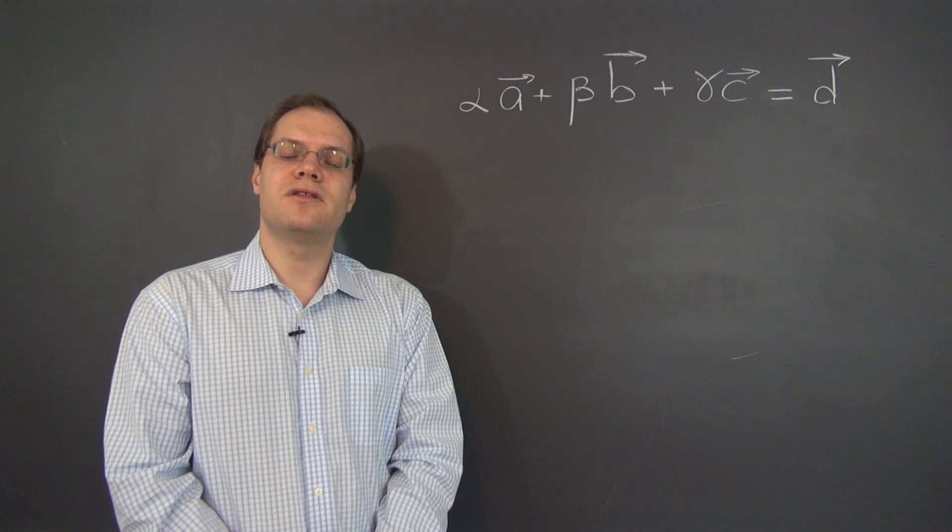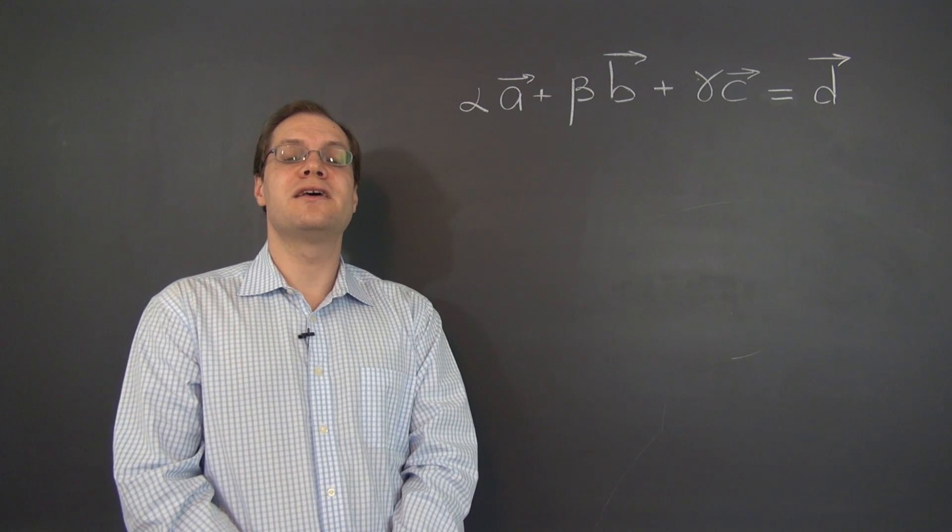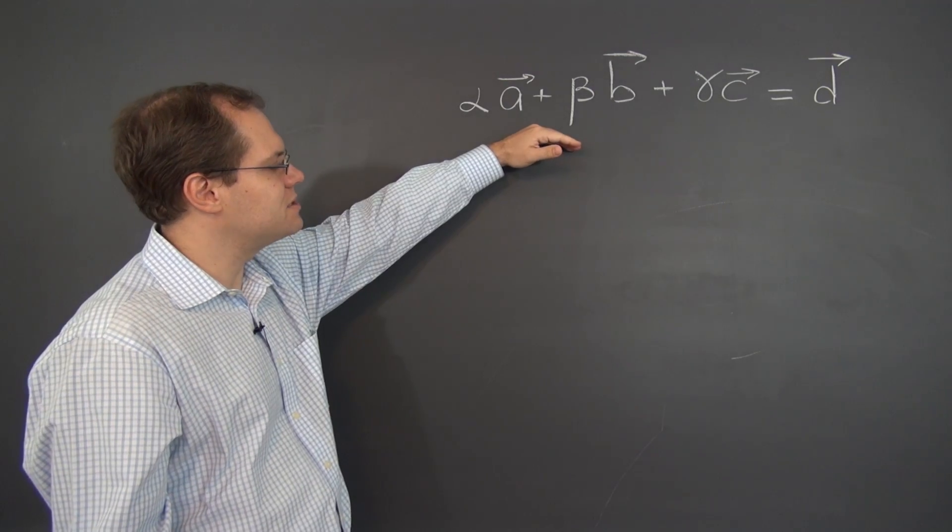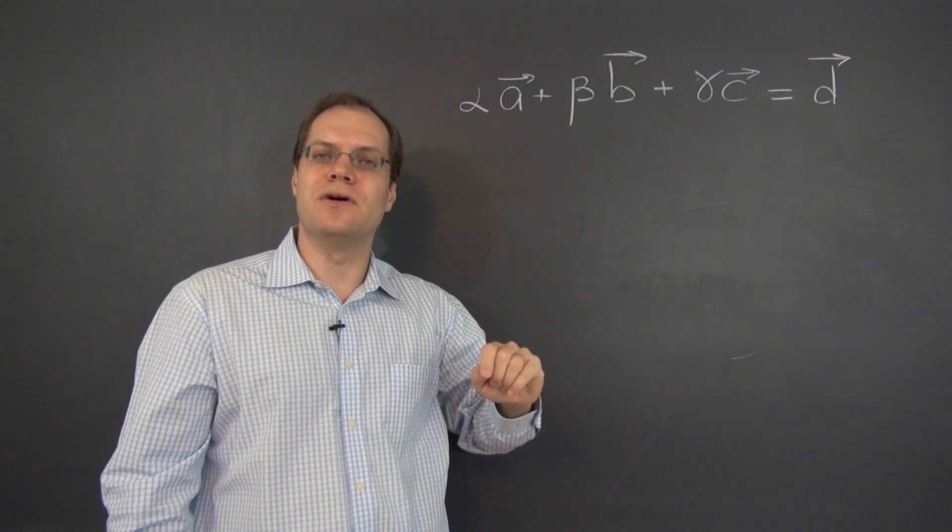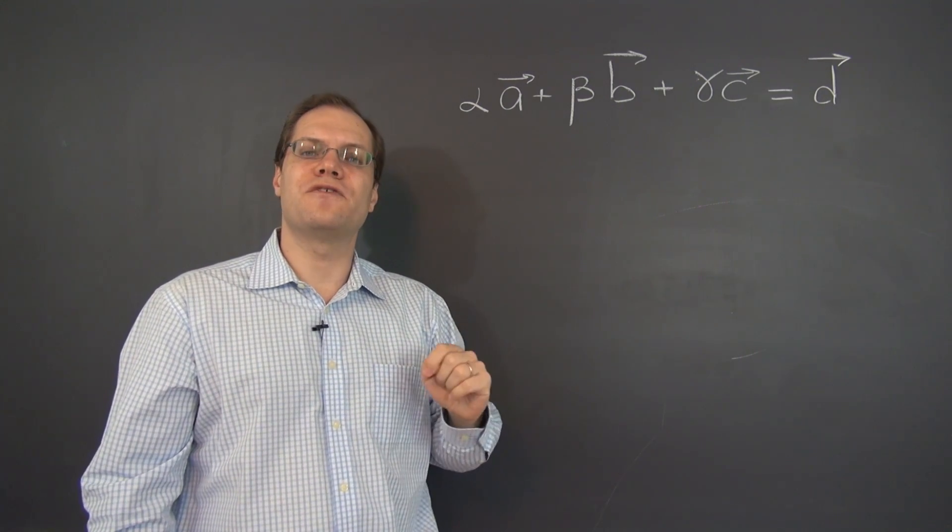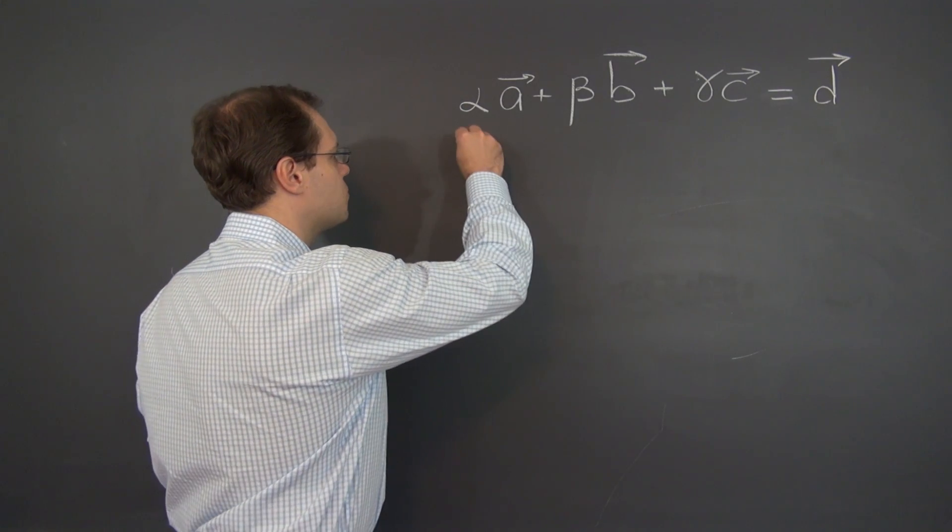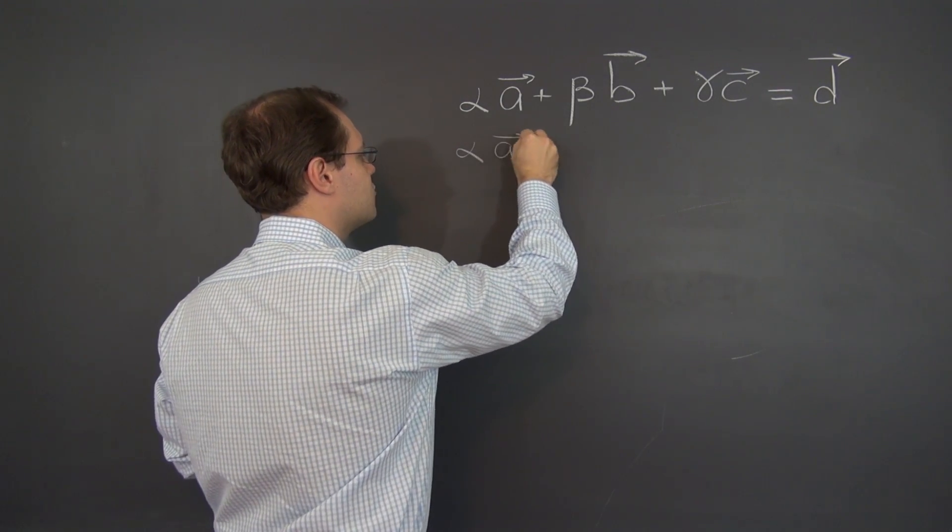So let's show that if there are two different decompositions of the vector d, then the vectors a, b, and c are linearly dependent. So suppose one of the decompositions has coefficients alpha, beta, and gamma. And another one, a different one, has coefficients alpha one, beta one, and gamma one. And at least one of these coefficients needs to be different from the original coefficients.